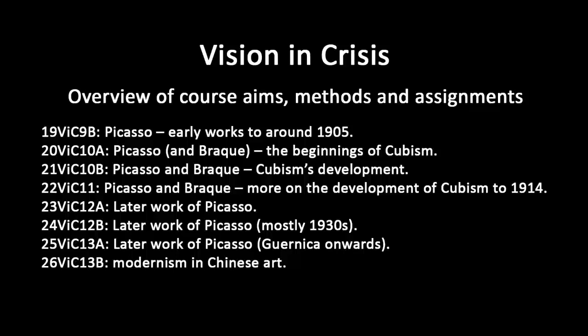We'll look at post-impressionism, Fauvism, and Cubism. At the very end of the course we'll look a little at some things happening in Chinese art in the same time period as a way to de-center a course that otherwise is very European-centered. The way art history is often told is a European or Western-centered story, and it's important to try and break down that centeredness.